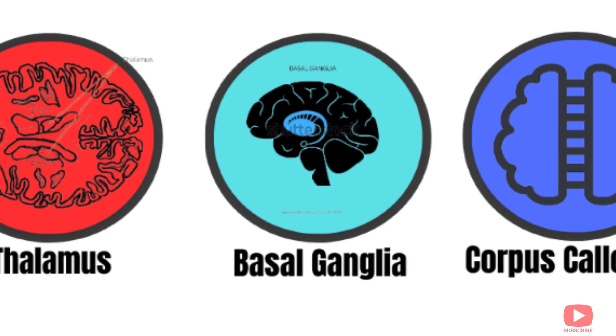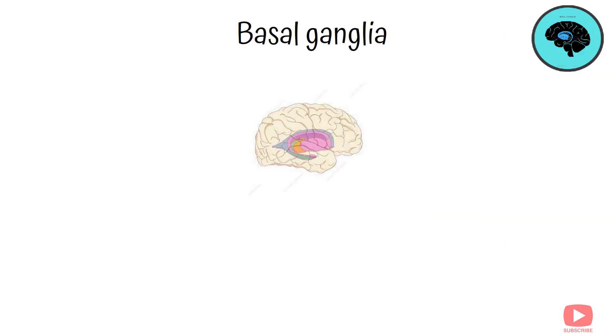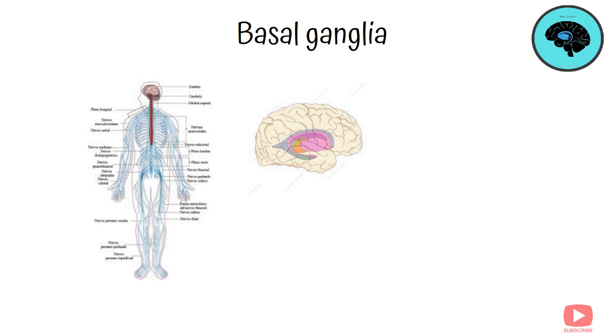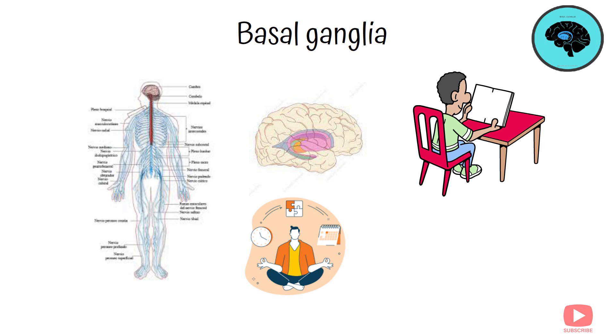Basal ganglia. The basal ganglia is a group of structures that coordinate movement. It helps with voluntary motor control and also plays a role in habit formation, learning, and emotions.